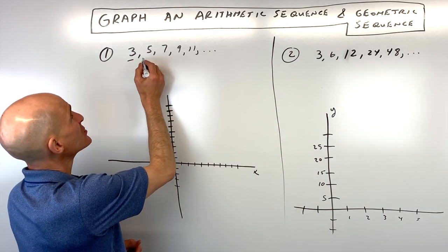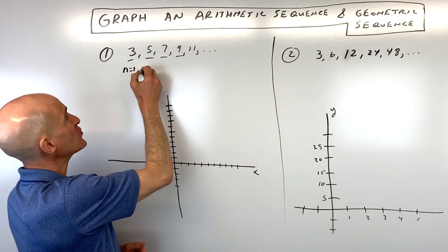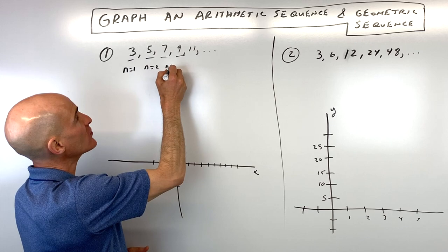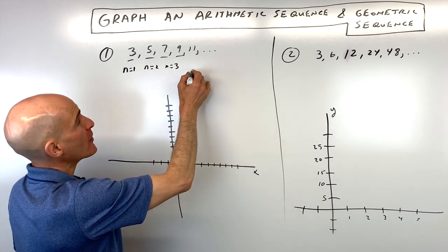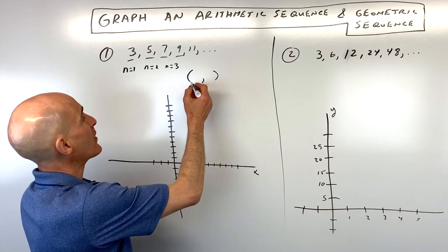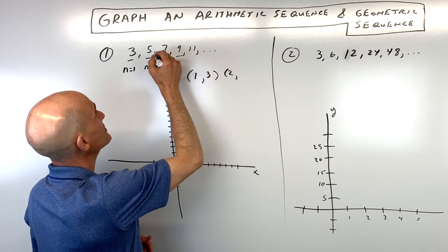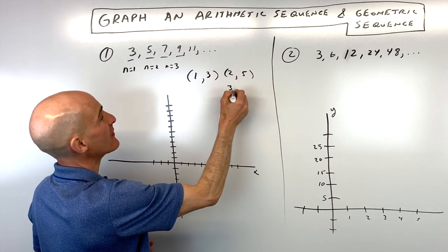The key thing here is to realize that each one of these terms can be represented by n equals 1, n equals 2, n equals 3, etc. And the other thing you can do is you can coordinate these elements by writing the first term is 3, and then the second term is 5, and the third term is 7, etc.